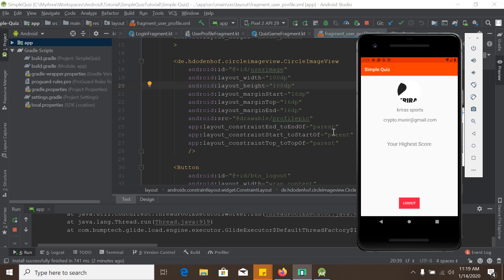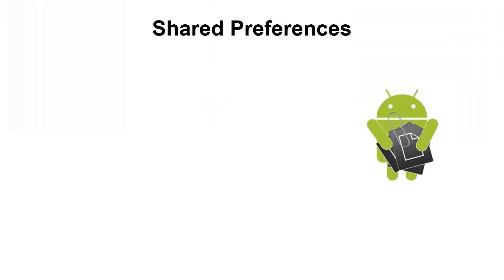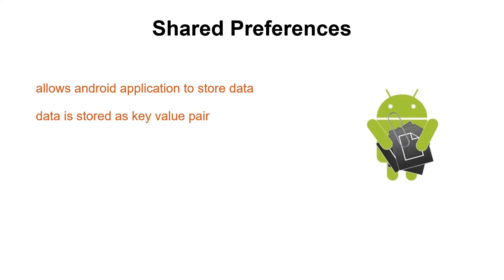In this tutorial, we will learn how to store the highest score of a user using Shared Preferences. Android Shared Preferences allows us to store data in memory of an Android phone so that data is not lost even when the app gets closed. Shared Preferences allows activities and applications to save preferences or data. If you have a relatively small collection of key-value pairs that you would like to save, you should use Shared Preferences. A Shared Preferences object points to a file containing key-value pairs and provides simple methods to read and write them.